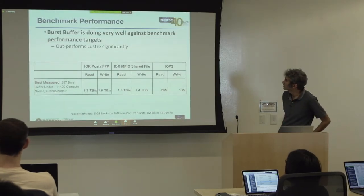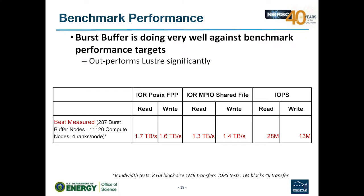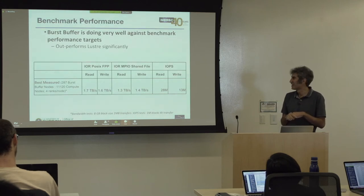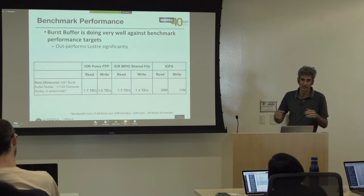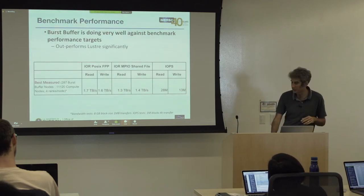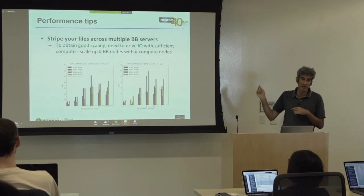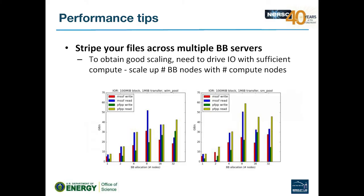In terms of performance, against benchmarks the burst buffer does very well — you can get 1.7 terabytes per second and huge numbers of IOPS compared to the Lustre file system. This is also more stably true: the Lustre file system degrades over time, so you're not going to get 700 gigabytes per second even at best, whereas with the burst buffer you should still potentially achieve peak performance. Though this is for somewhat idealized tests, there are performance tips on the burst buffer web pages.